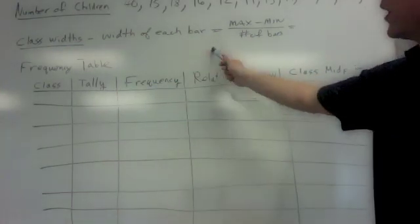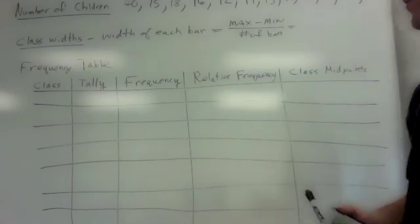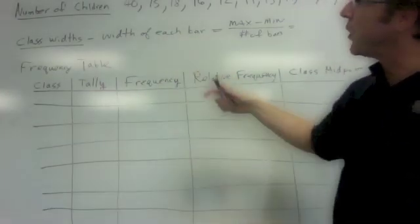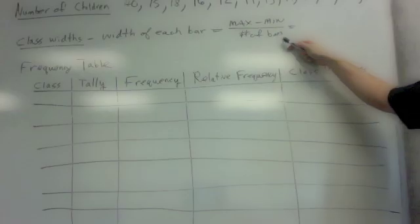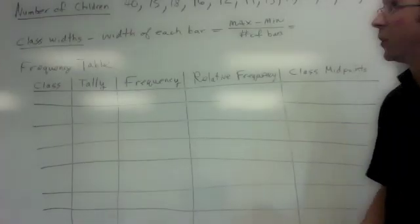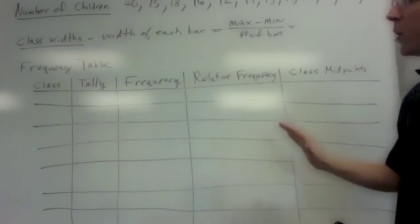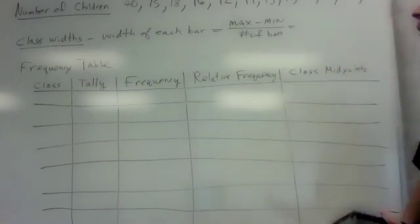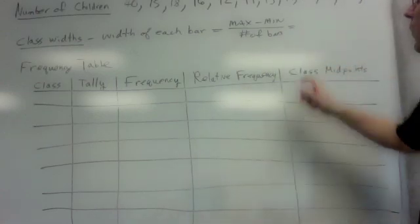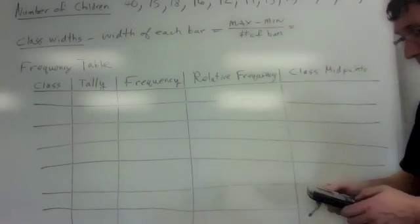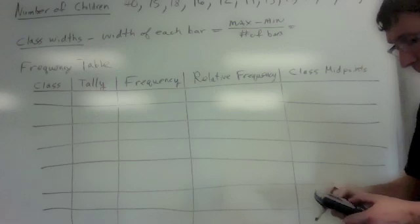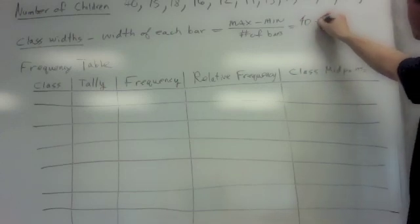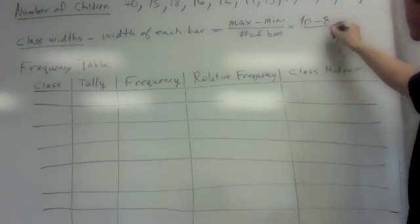We need to figure out how large to make our bars for the histogram. To do that, we calculate something called the class width. Class width is the width of each bar, and the formula is very simple: it's just the range divided by the number of bars that are being requested or that you think might be necessary. Usually between 5 and 12 bars is pretty common for a histogram. For this example, we'll use 5 just to make the work a little bit simpler.